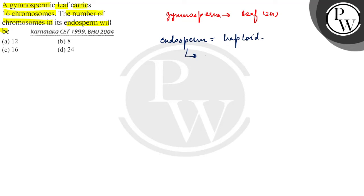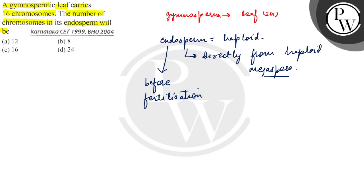The endosperm is directly developed from a haploid megaspore. The haploid megaspore directly forms the endosperm. The endosperm forms before fertilization, so the endosperm is haploid.